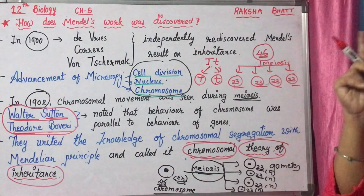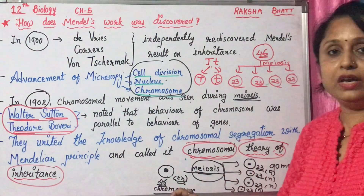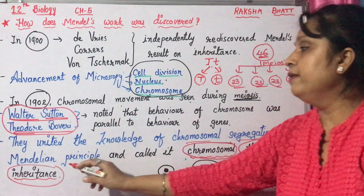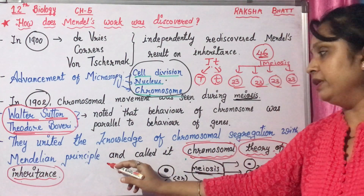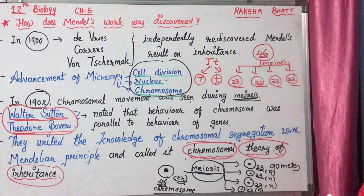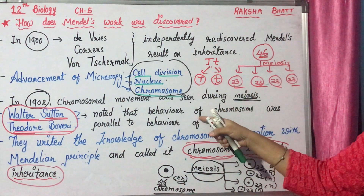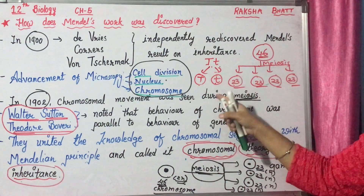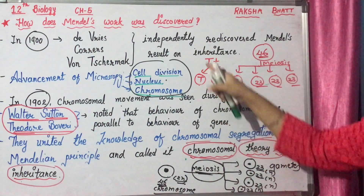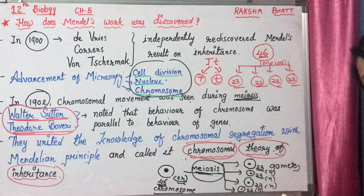The name of the theory is the Chromosomal Theory of Inheritance. This is a very important topic — many MCQs in exams have come from this. Learn it perfectly. This is the best theory for MCQ-based questions. Thank you.